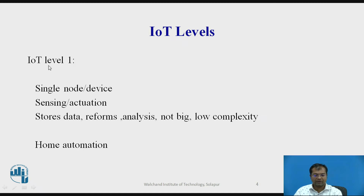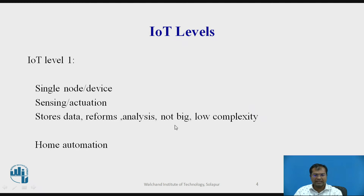Now we will focus on the different levels of IoT. The first is IoT level 1. In this level, a single node or device is used, which may make use of sensors or actuators. The storage of data is present but small in size. Analysis is performed on the data. There is small data, not big, and hence there is low complexity. An example under this level is home automation.